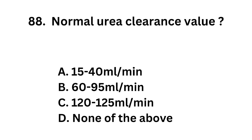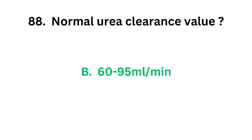Question number 88. Normal urea clearance value: Option A: 15 to 40 ml per minute. Option B: 60 to 95 ml per minute. Option C: 120 to 125 ml per minute. Option D: None of the above. The correct answer is option B. Normal urea clearance value is 60 to 95 ml per minute.